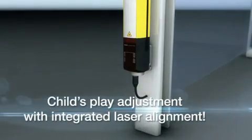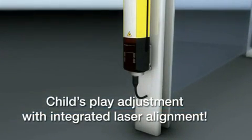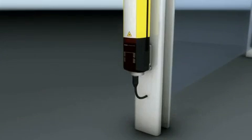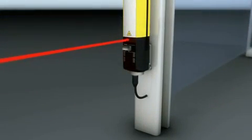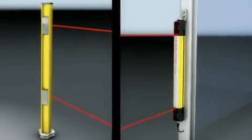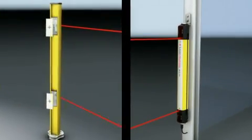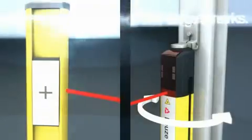Or the integrated laser alignment aid. Simply activate it with a magnet key and direct the laser beam onto the template at the deflecting mirror column until the target has been hit.